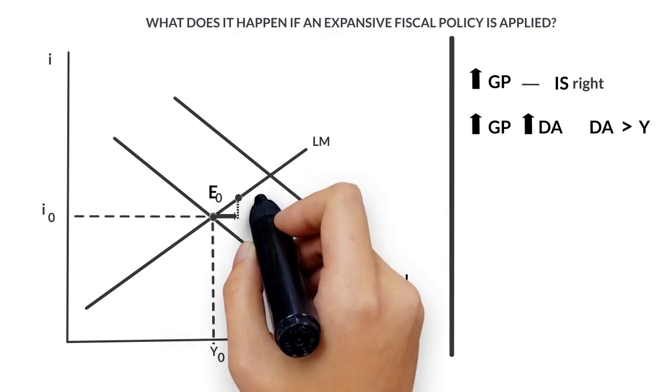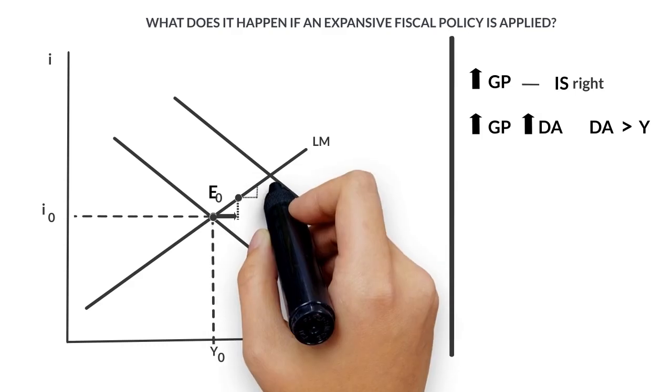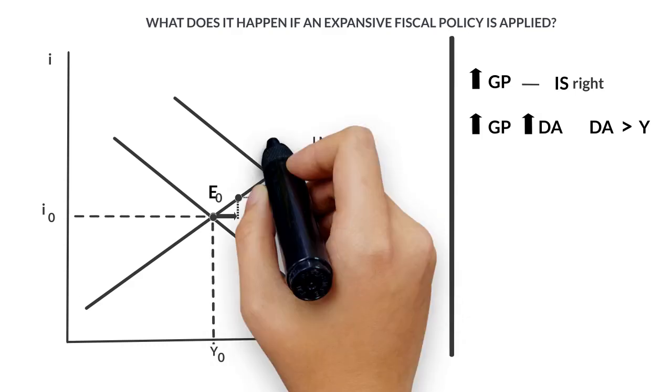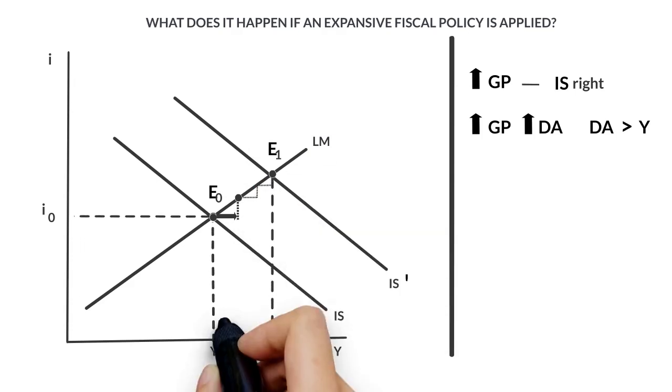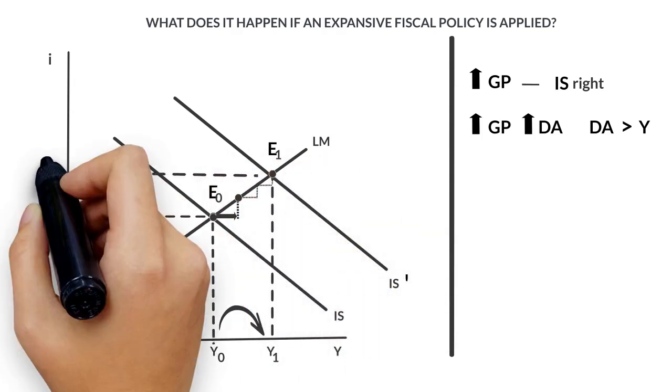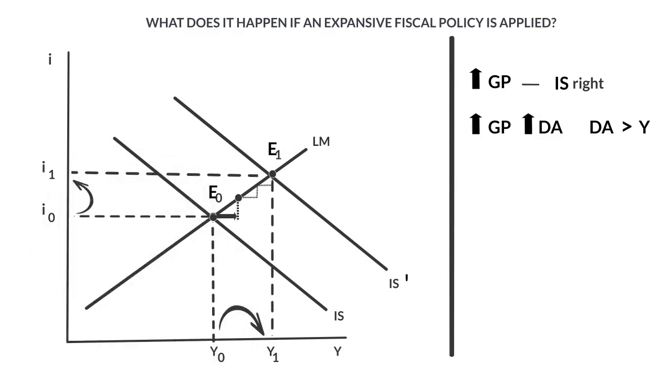Therefore, there will be an increase in the income level. However, while this is increasing, the money market will not be in equilibrium since we are not on the LM curve. This fact will determine that the interest rate increases, getting on the LM curve. This process will continue until we reach a new equilibrium point between the IS and LM curves. That is to say, in point E1.